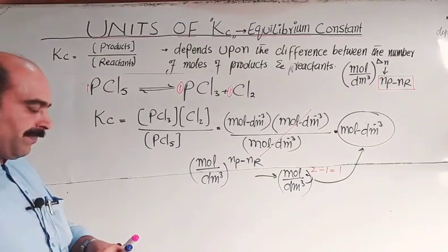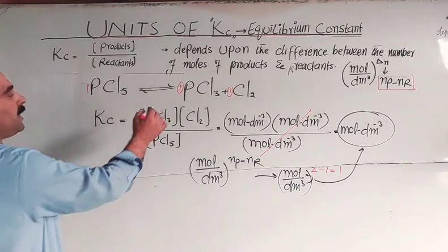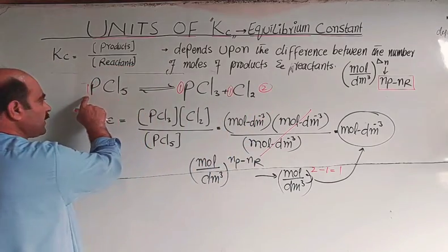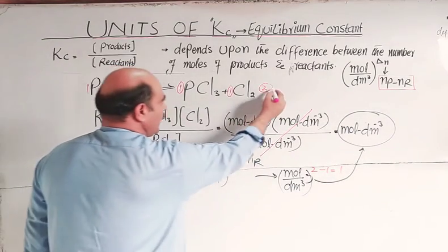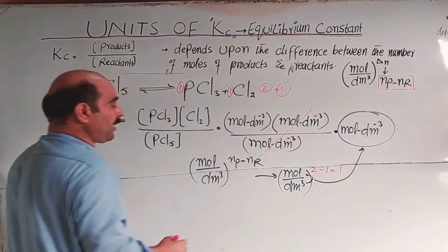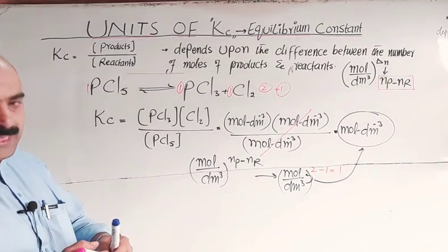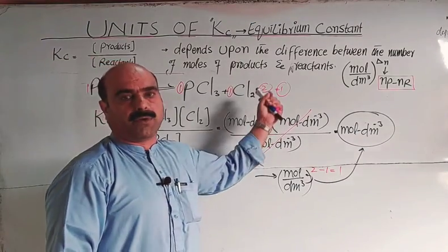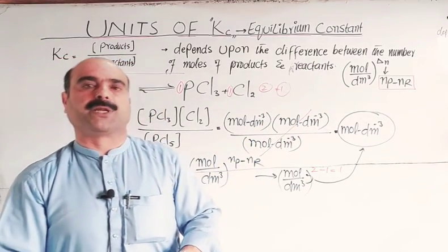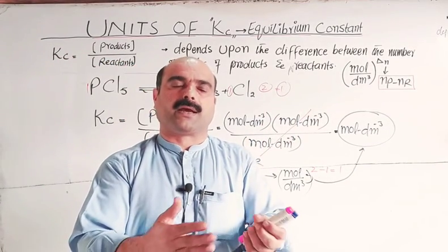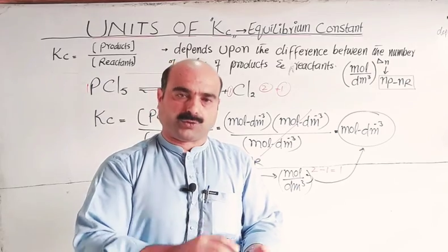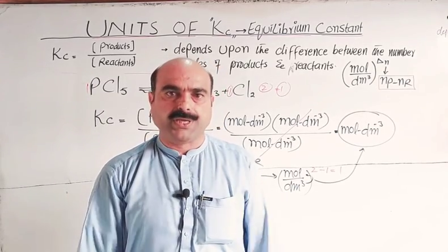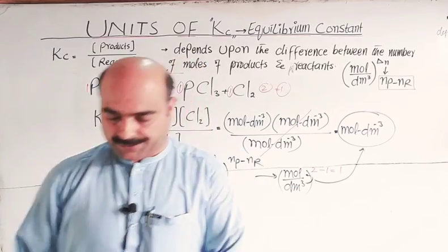In general, when the number of moles of products does not equal the number of moles of reactants, Kc will have a unit. The unit of Kc depends on the total number of moles of reactants and products. When the difference is equal to zero, the unit cancels out in the ratio. Thanks a lot for watching the video.